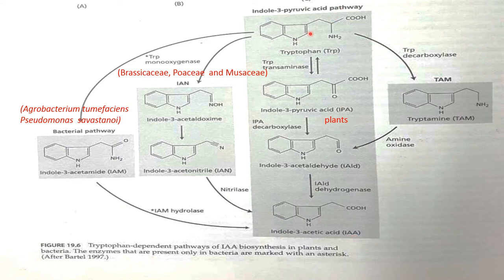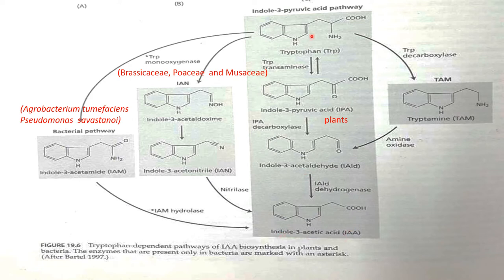First, tryptophan is converted into indole-3-pyruvic acid with the help of the enzyme tryptophan transaminase. This indole-3-pyruvic acid is converted into indole-3-acetaldehyde with the enzyme indole-3-pyruvic acid decarboxylase. Then indole-3-acetaldehyde is converted into indole-3-acetic acid. This pathway is called the IPA pathway because the first intermediate formed is indole-3-pyruvic acid, and this pathway is seen in most plants.